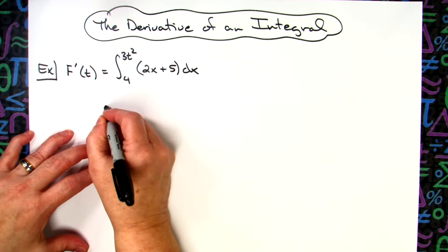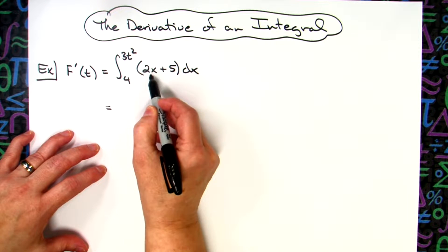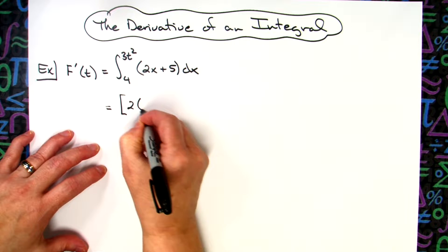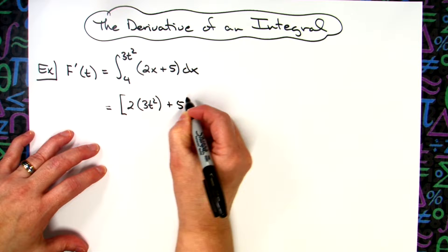It's a pretty straightforward process. Basically, all we have to do is take this upper limit and plug it into the function. So when I do that, then I'll have 2 times 3t squared, and then plus 5.